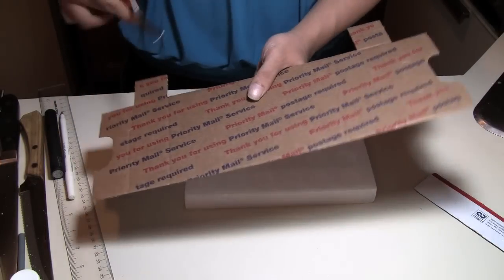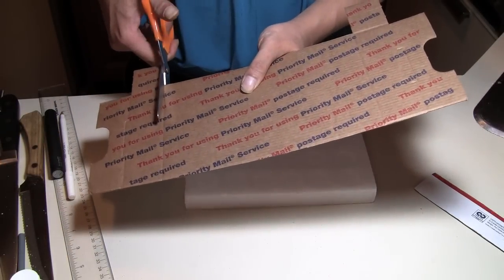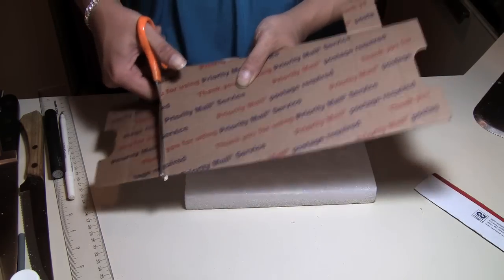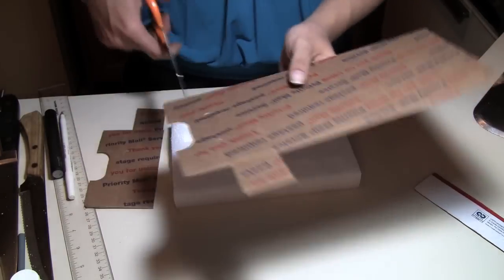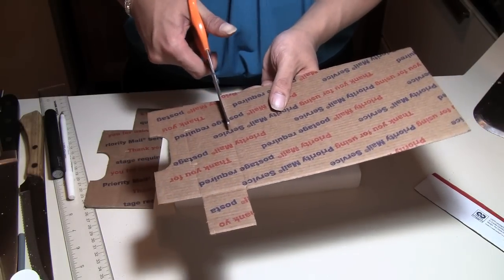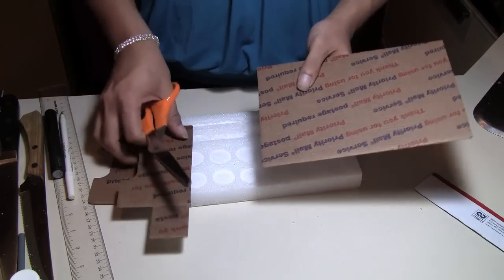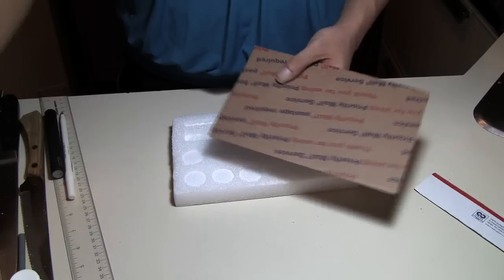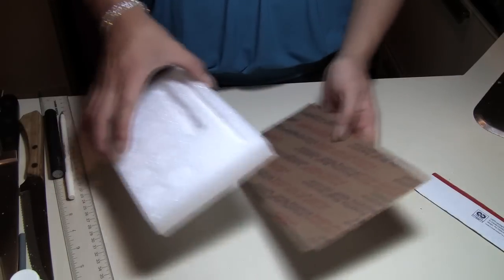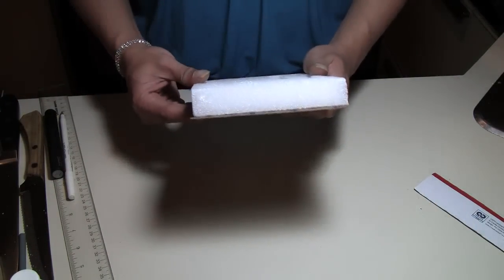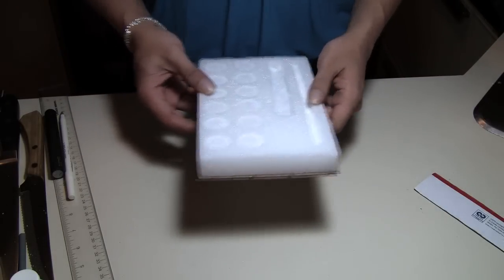Now using my third USPS flat rate box, or you can pretty much use any cardboard at this point really, I'm just going to cut off the same exact dimension as the styrofoam. And this is going to be my baseboard for the styrofoam. Now all I need to do is glue that to the back of the styrofoam. So that it'll act as the baseboard.